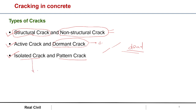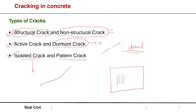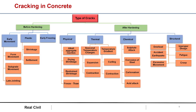Isolated cracks means there will be a single crack like this. Pattern cracks will be somewhat like alkali-aggregate reaction or crazing — there will be a pattern of cracks. Now let's see some types of crack based on when they occur.